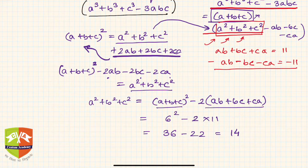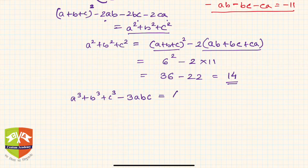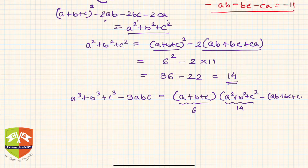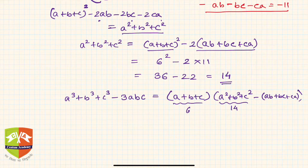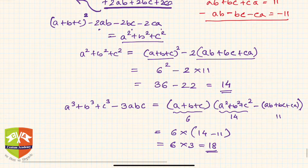Now we deploy all the values. A cube plus b cube plus c cube minus 3abc equals a plus b plus c, which is 6, times a square plus b square plus c square minus ab plus bc plus ca, which is 14 minus 11. So it is 6 into 3, which equals 18.